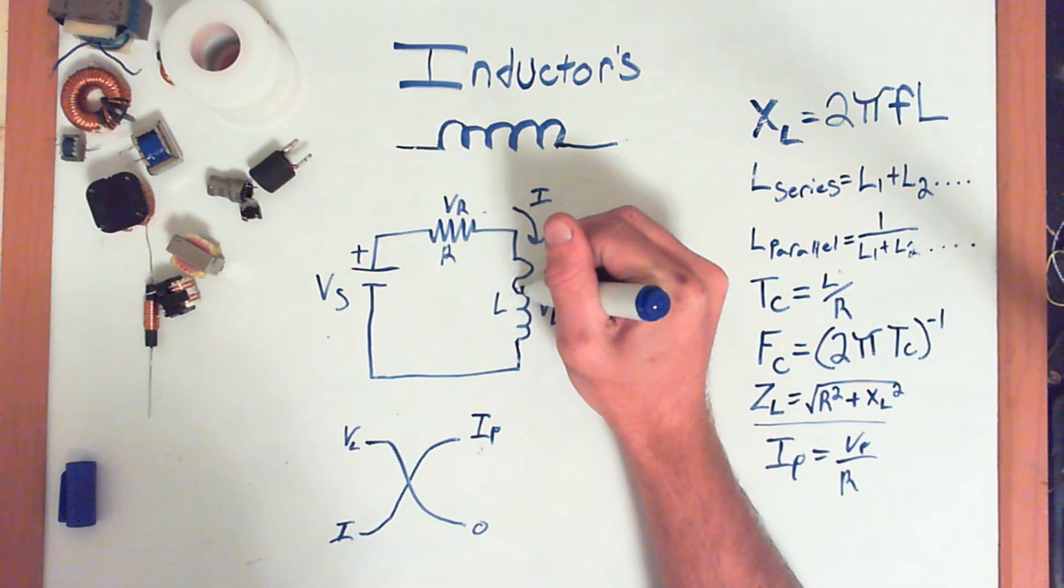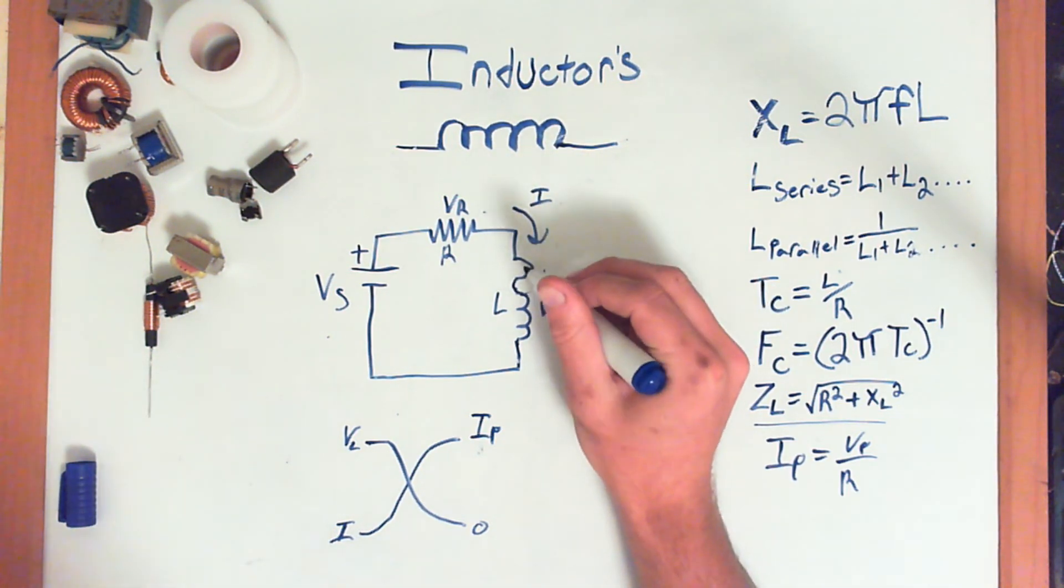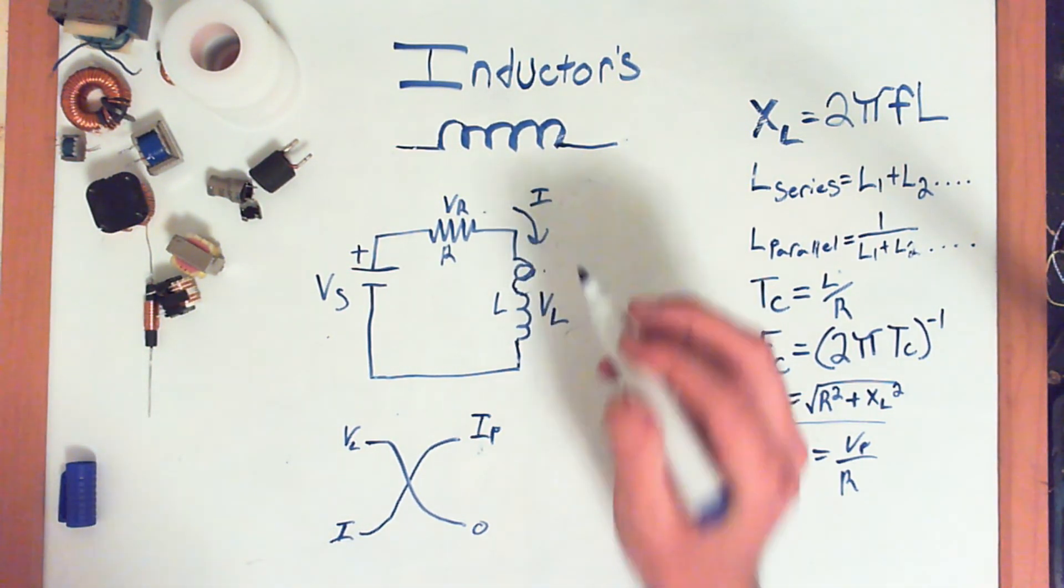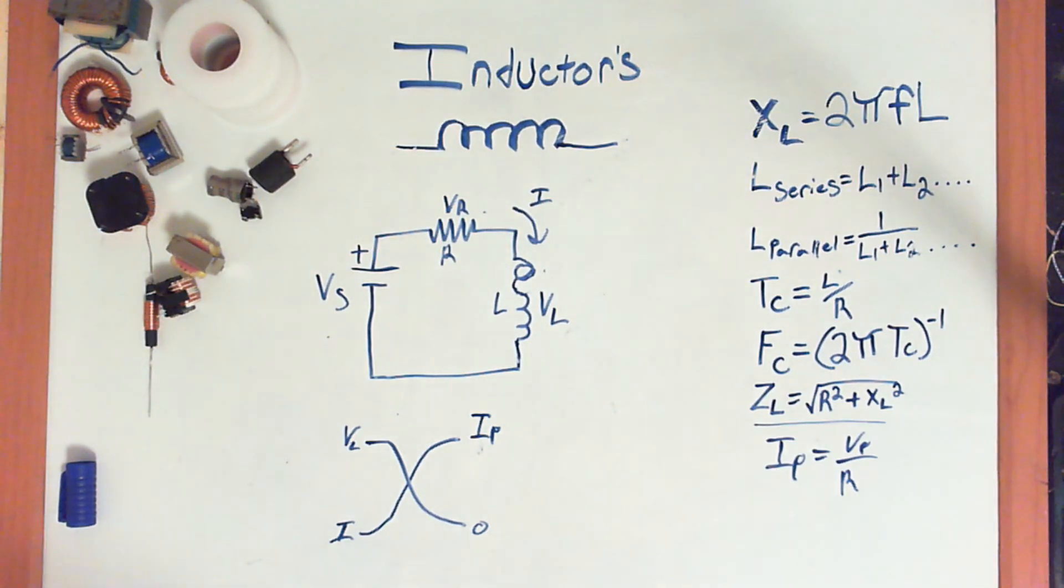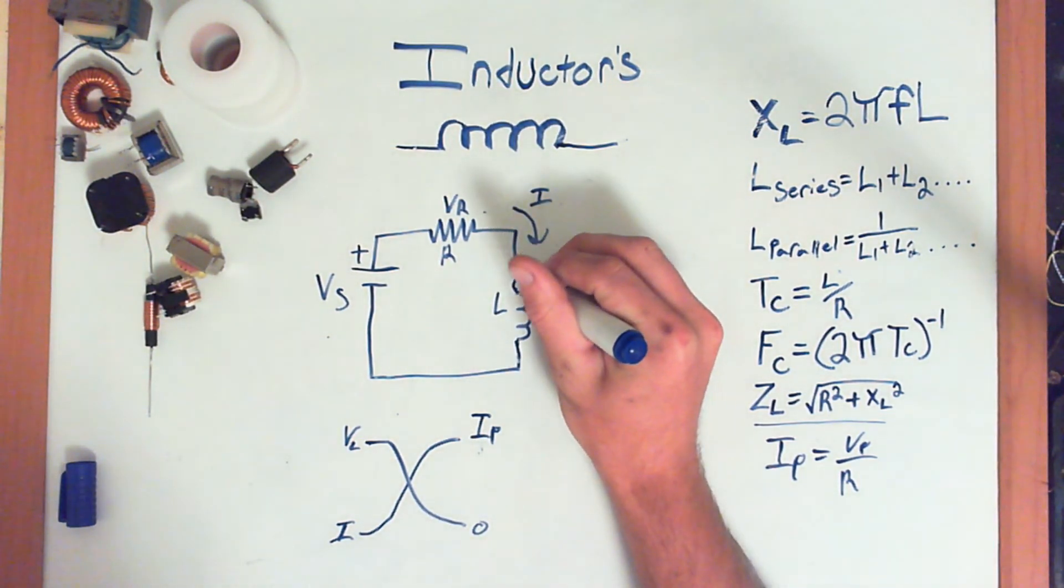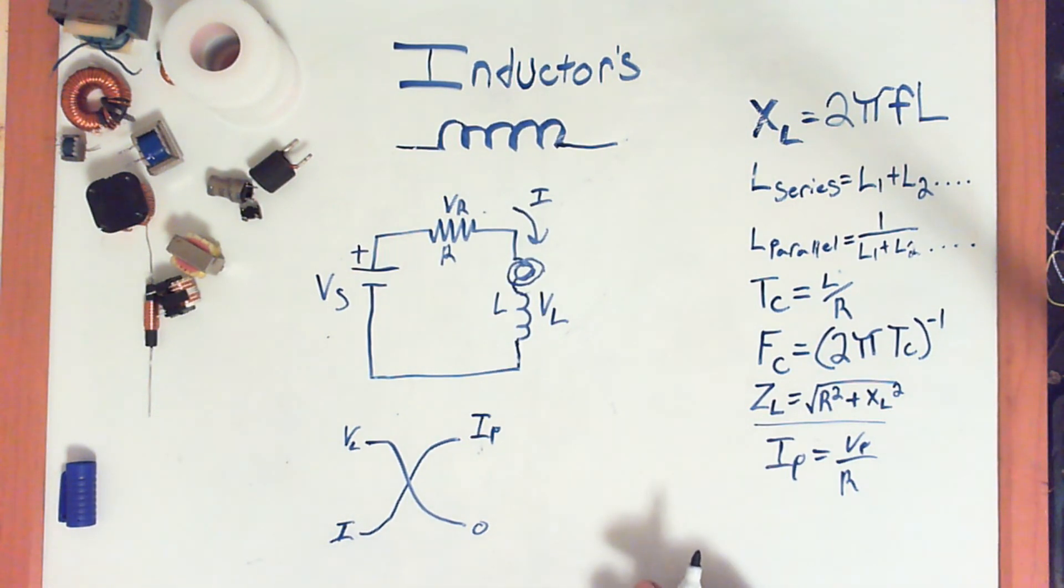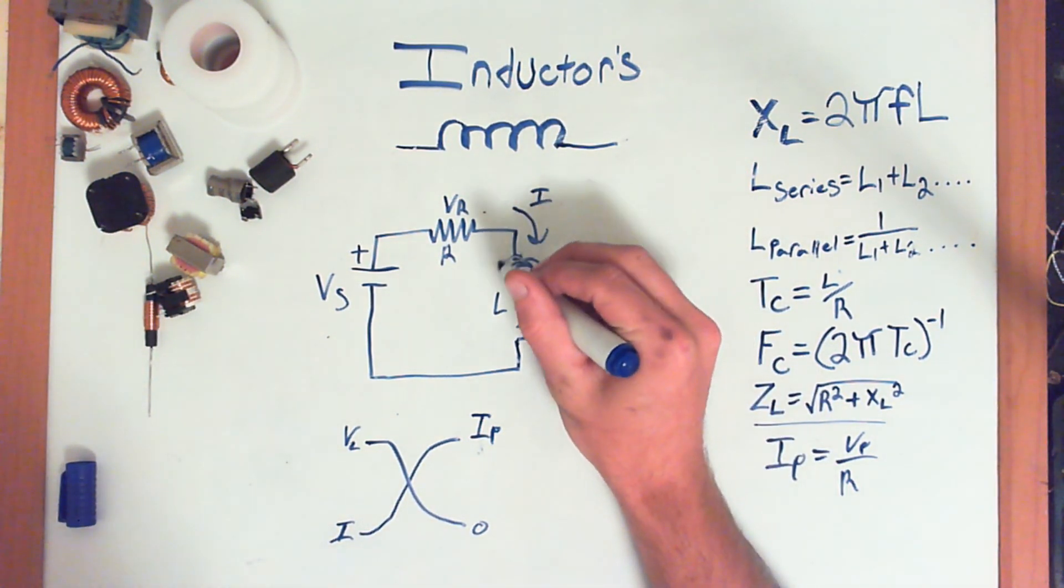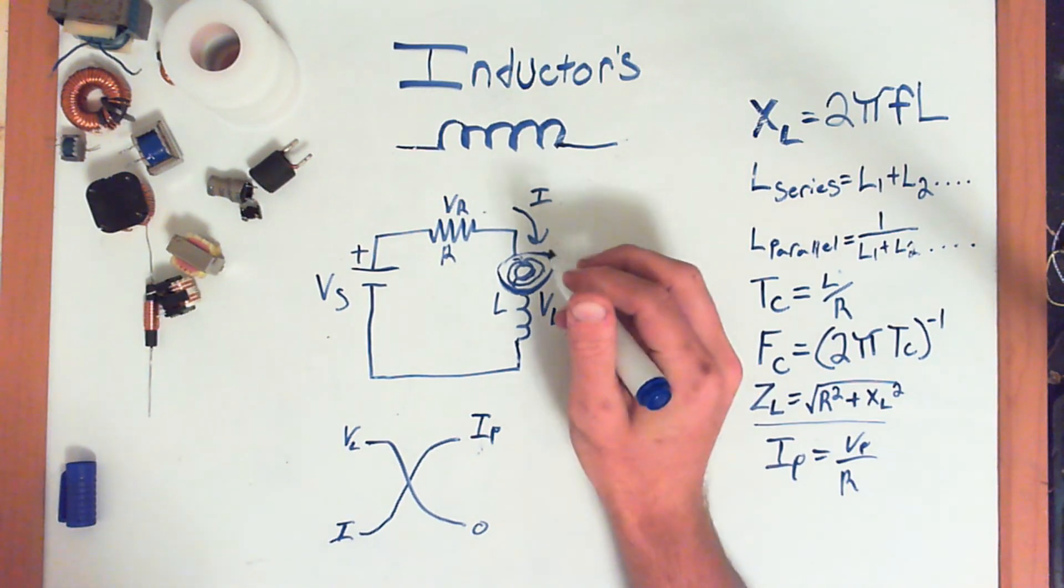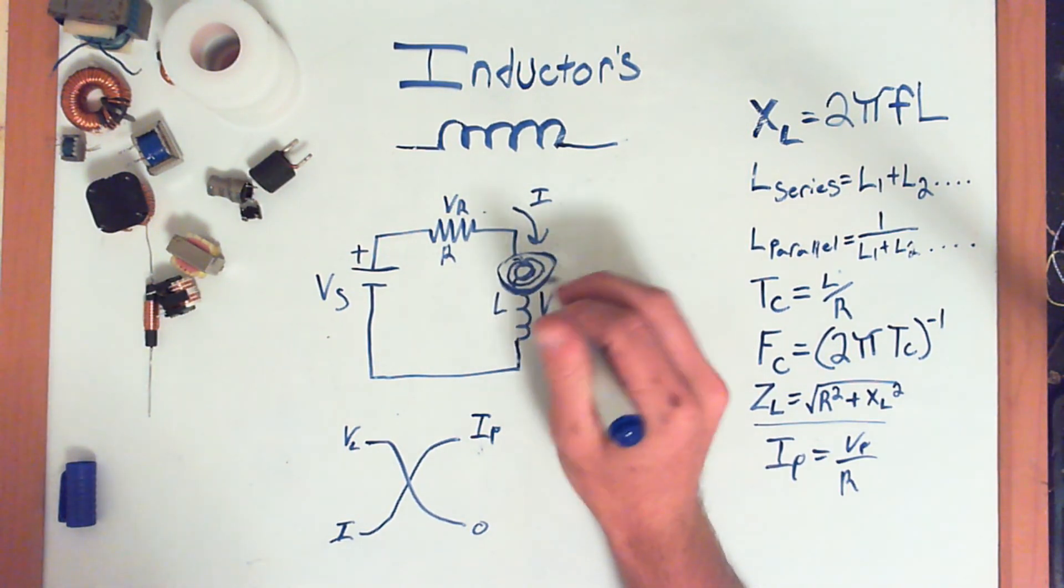And as current starts to build in these windings, a little bit more is going to start going through. And the flux around this, or magnetic field, is going to start to build. And as it builds, it's going to resist the change in current even more. Just like capacitors, as they start to charge up to their capacitance, they start slowly gaining the voltage. So, these are going to start slowly getting the amperage. But eventually, it's going to reach its steady state.